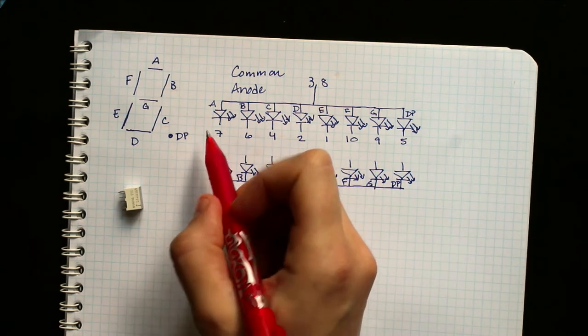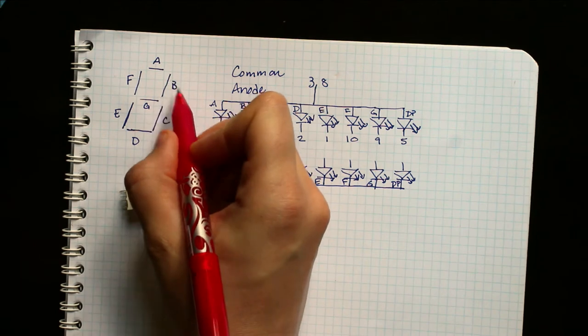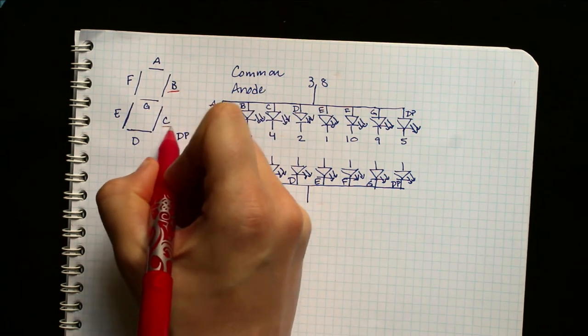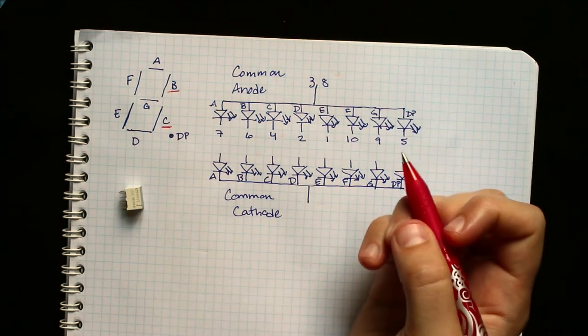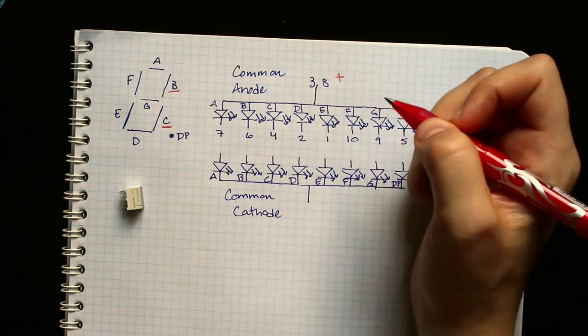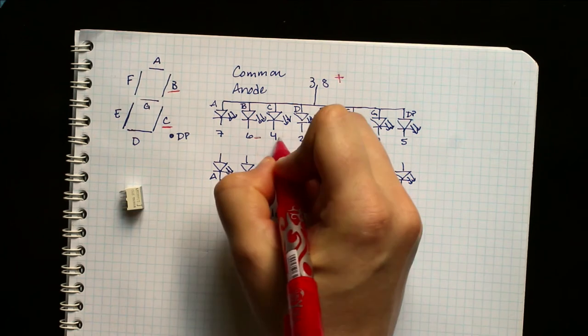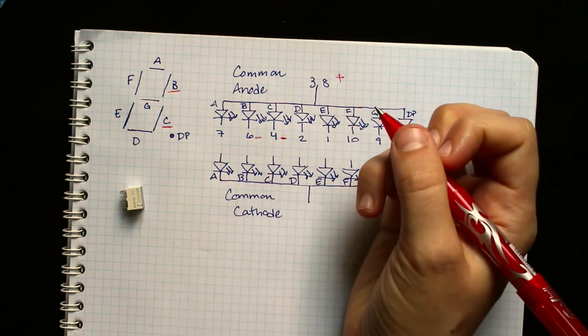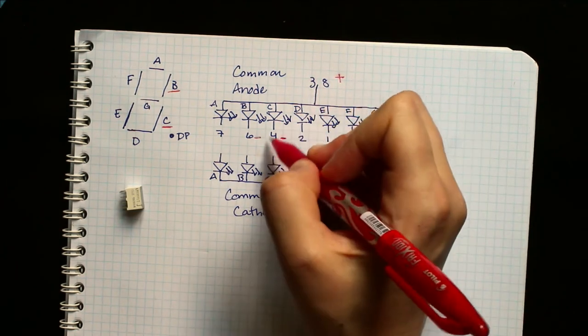So for example, if we wanted to display a one, we need to have B and C illuminated. So that means we need to connect this pin to high and this pin and this pin to low. And that will allow current to flow.